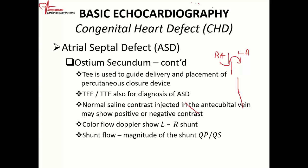You can also use color flow Doppler, which will identify an ostium secundum defect easily. You can estimate the magnitude of the shunt flow — how much blood is flowing across the defect — by looking at the pulmonary-to-systemic flow ratio. QP/QS is the flow through the pulmonary circuit divided by the flow through the systemic circuit. Going back to basic hemodynamics: flow equals TVI times cross-sectional area.